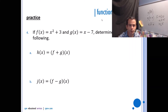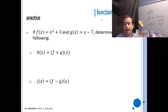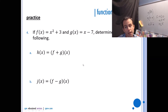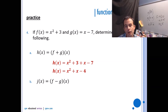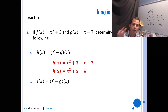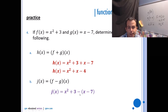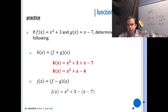If f(x) = x² + 3 and g(x) = x − 7, let's build the equations. (f + g)(x), defined as h(x), is x² + 3 + x − 7, which simplifies. For (f − g)(x), defined as j(x), the key is to put the subtracted polynomial in brackets: x² + 3 − (x − 7), giving x² − x + 10. That negative sign applies to everything inside the brackets — a common mistake.